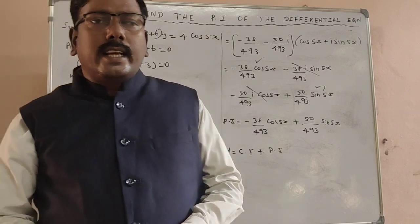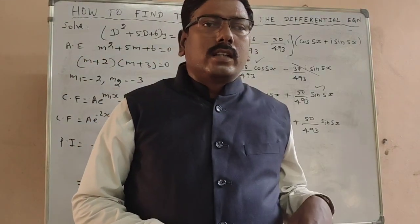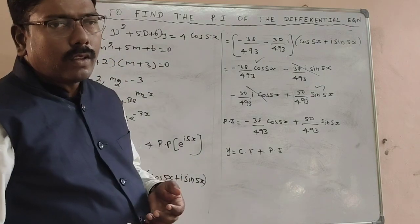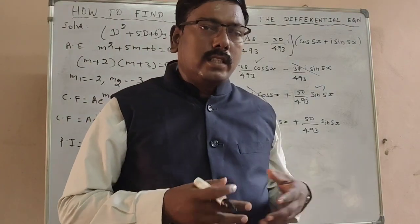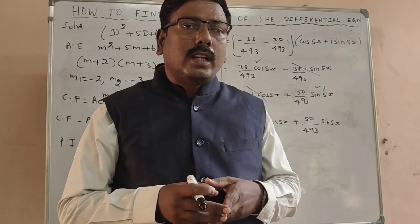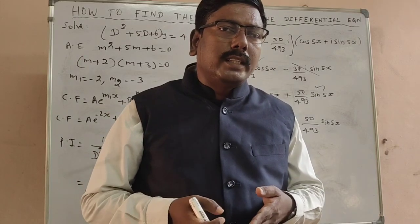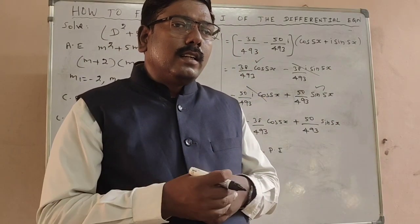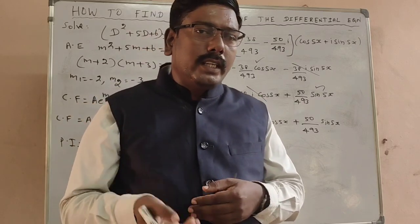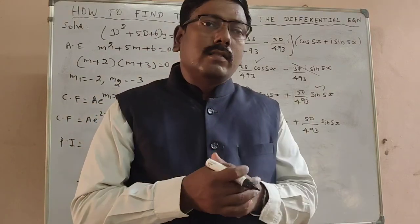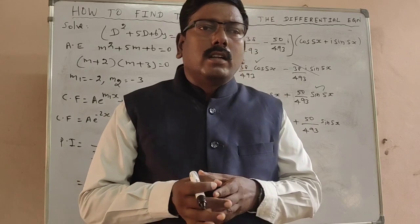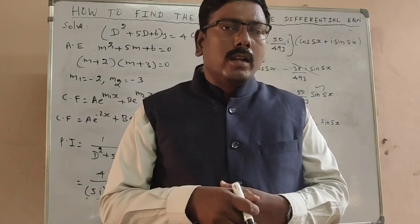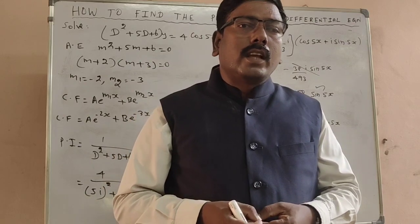One caution: in case of failure — that means when the denominator comes to zero — we cannot use this method. At that time we have to use the ordinary method: multiply the numerator by x, differentiate the denominator with respect to d, and follow the general procedure. I hope you understood. Thank you. Thanks for watching. Please subscribe to my channel. Have a pleasant life.